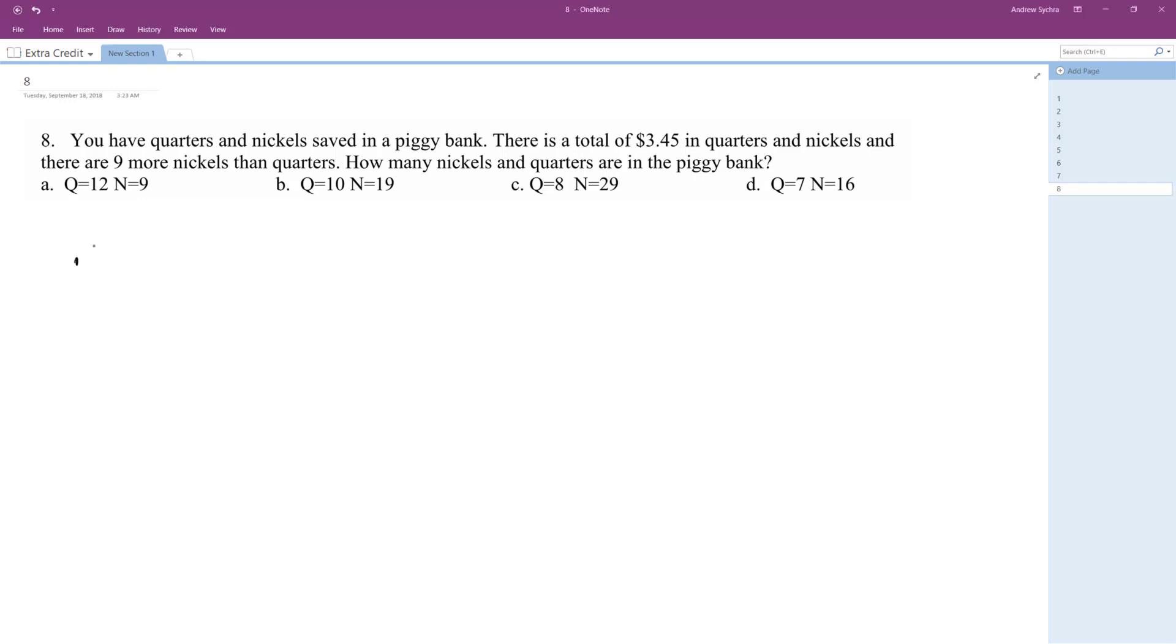So quarters and nickels. For quarters, 0.25Q—so Q is the number of quarters—plus 0.05N equals 3.45.